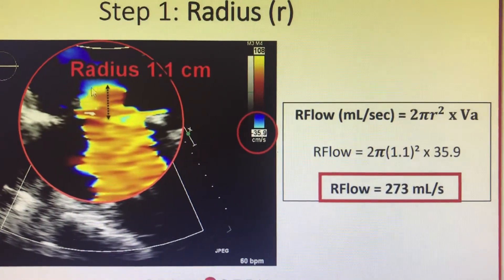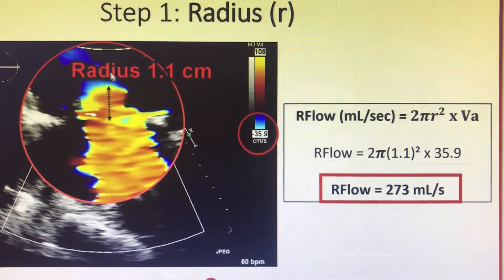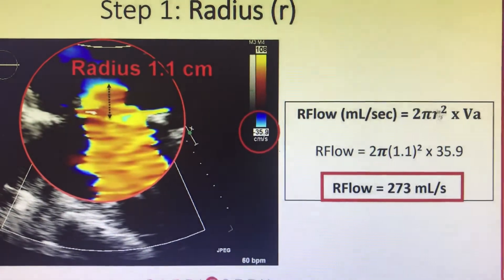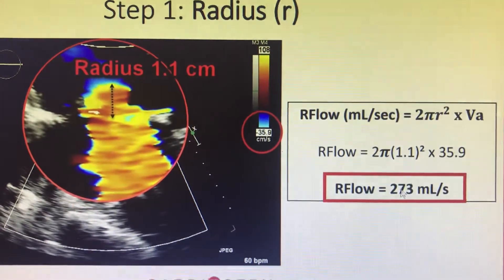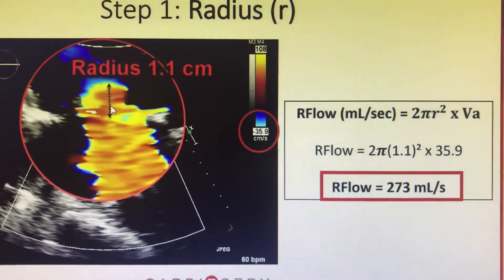If it is less than hemisphere, if it becomes more bulging like oval, most probably your r will increase and the regurgitation flow will increase. It will overestimate the regurgitation.